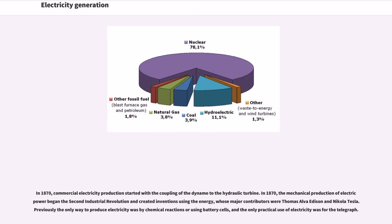In 1870, commercial electricity production started with the coupling of the dynamo to the hydraulic turbine. The mechanical production of electric power began the second industrial revolution and created inventions using the energy, whose major contributors were Thomas Alva Edison and Nikola Tesla. Previously the only way to produce electricity was by chemical reactions or using battery cells, and the only practical use of electricity was for the telegraph.